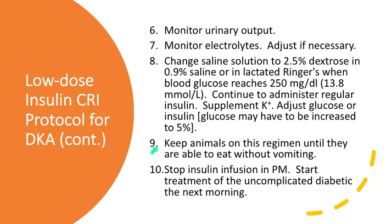Keep the animals on this regimen until they can eat without vomiting, because that's the key. They have to keep food down in order to allow use of a longer-acting insulin. Once you make that decision, stop the insulin in the afternoon or evening and then start treatment of the uncomplicated diabetic the next morning.